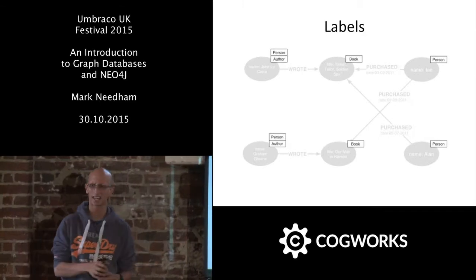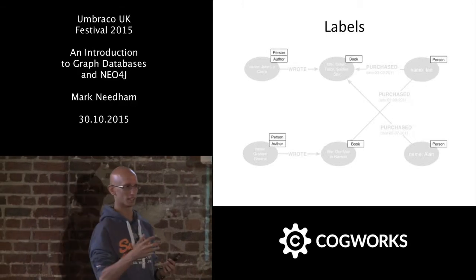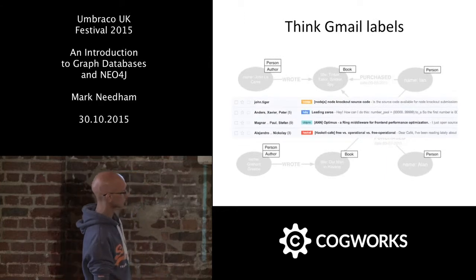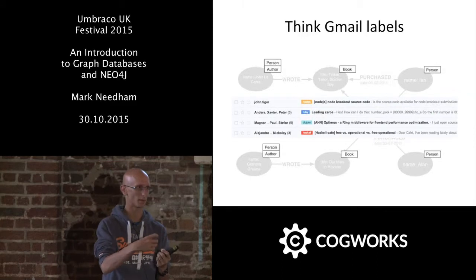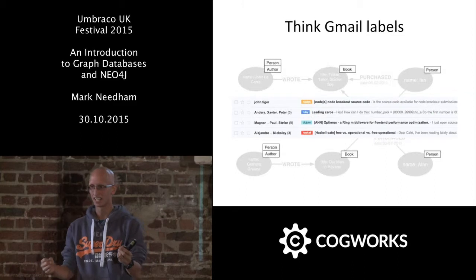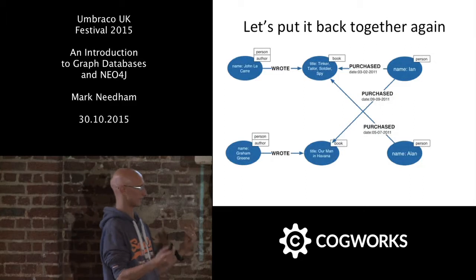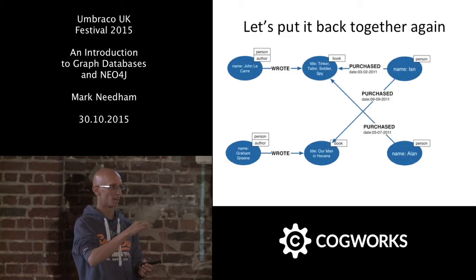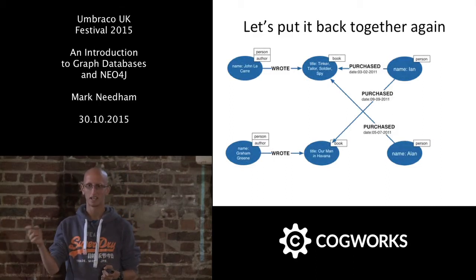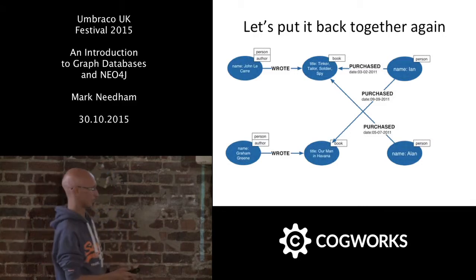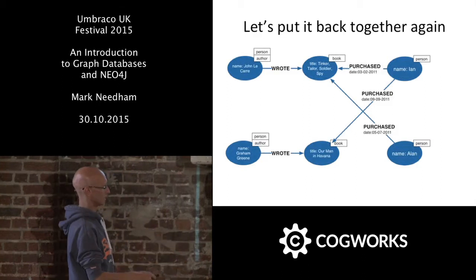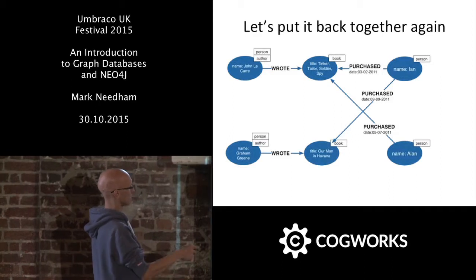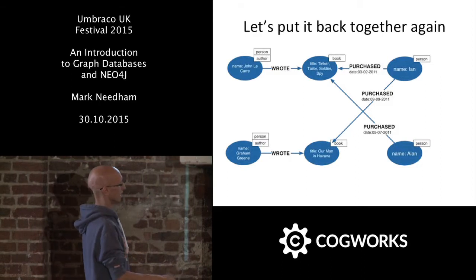So going back to the model, you now know all the terminology. We've got nodes: John le Carré, Graham Greene, Alan. John le Carré wrote Tinker Tailor Soldier Spy, Alan purchased it. There's metadata as properties on the nodes and relationships. The query language used to work with this is called Cypher — now an open standard that others are implementing as well. It's based on SQL's declarative approach, but applied to querying a graph by making a text version of a whiteboard diagram.